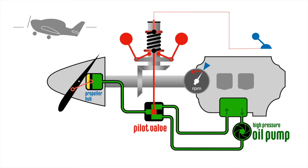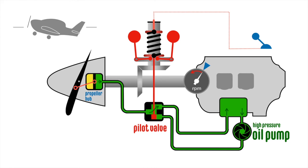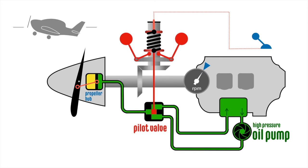The flyweights move inwards, open up the pilot valve and allow oil to flow out of the propeller hub. The blade angle decreases so that the propeller takes a smaller bite of the air. This requires less engine torque, so the RPM speeds up and the flyweights move back to their equilibrium position. The pilot valve closes and the blade angle and engine RPM is maintained.